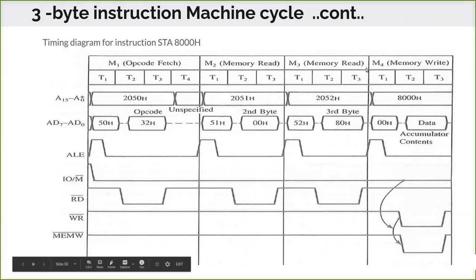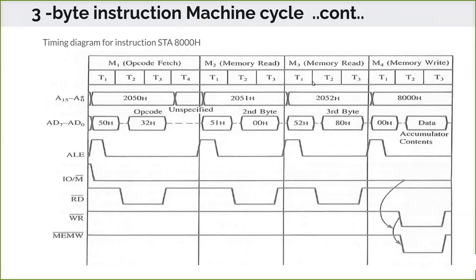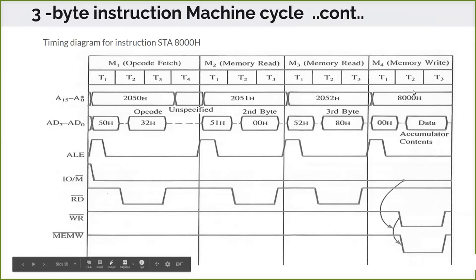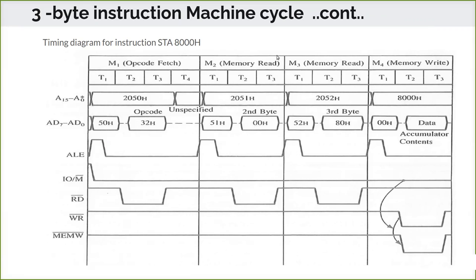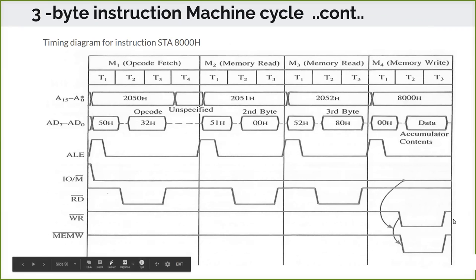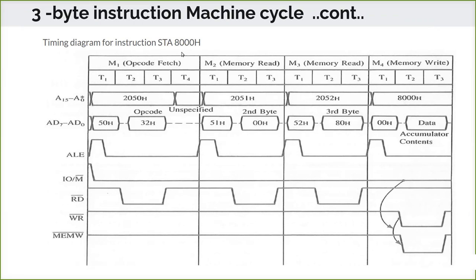Once all three bytes are read the instruction is executed: the meaning is to store the value of the accumulator in memory location 8000H. The accumulator value has been read, so now in machine cycle M4 the address 8000H is placed on the address bus — higher order 80 on A8-A15 and lower order 00 on A0-A7 — and the accumulator data is placed on the data bus. The write signal goes low indicating it is now a memory write. So this is how the 3-byte instruction STA works: first it reads the instruction from memory locations 2050, 2051, and 2052, then executes by storing the accumulator value in the target memory location.